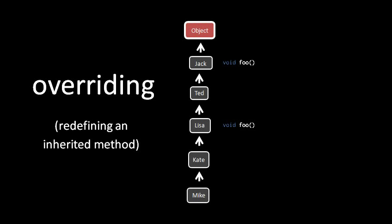So for example, in this class hierarchy, Jack has a method called foo which takes no arguments and returns void. Well, if in Lisa we also define a method named foo that takes no arguments and returns void,